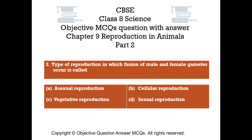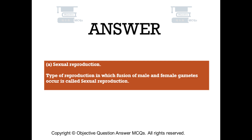Question number 2. Type of reproduction in which fusion of male and female gametes occur is called. Option A: Asexual reproduction. Option B: Cellular reproduction. Option C: Vegetative reproduction. Option D: Sexual reproduction. The right answer is Option D: Sexual reproduction. Type of reproduction in which fusion of male and female gametes occur is called sexual reproduction.